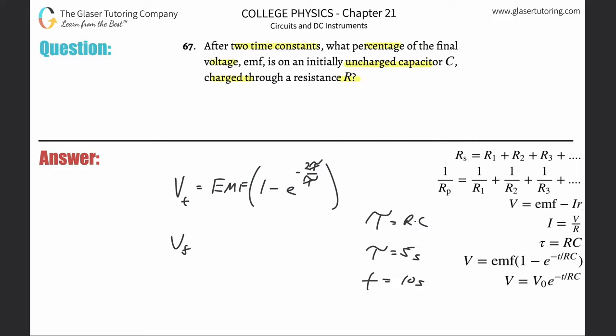And what are we left with? We're now left with VT or VF. It doesn't matter. Voltage at a certain point in time is equal to the battery's EMF multiplied by one minus E to the negative two. So now, obviously, we don't have EMF, we don't have final. What they're looking for is this term. This is the fractional change.